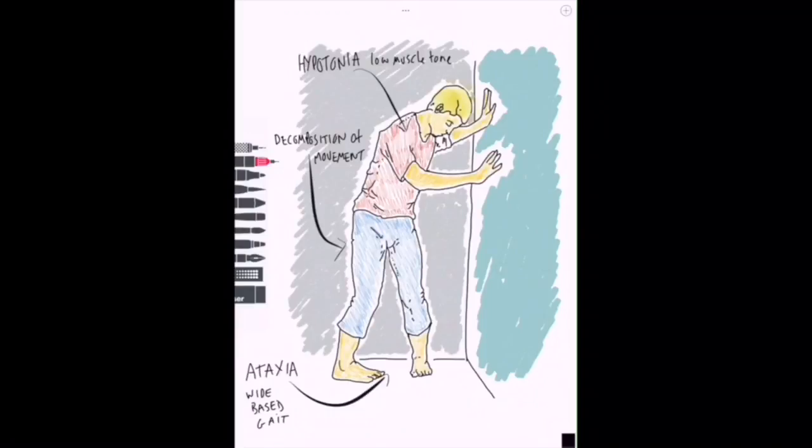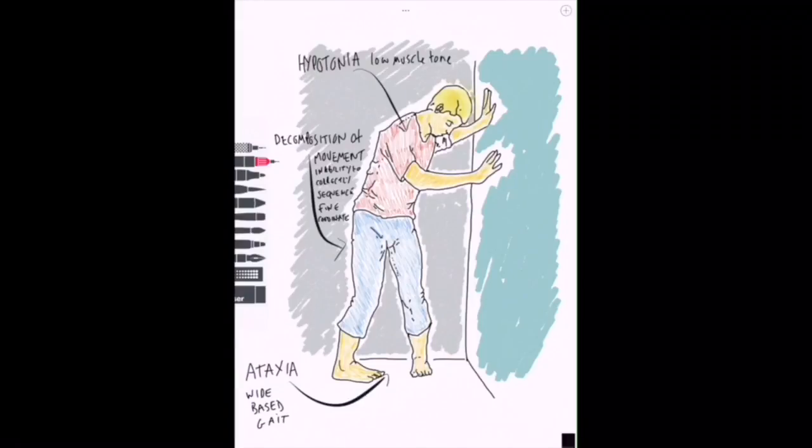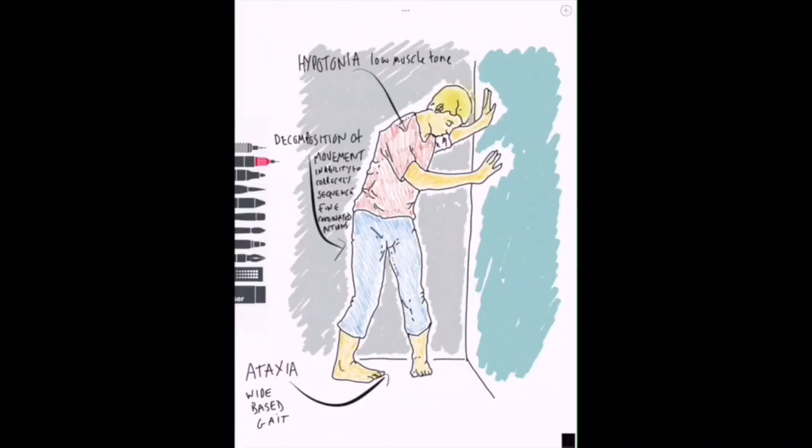Decomposition of movement is jerky and imprecise movements that are neither fluid nor smooth. The cerebellum is involved in complex movements and it can carry out very precise movements, so when it's damaged one of the most obvious things that we see is jerky, slow, imprecise, and non-fluid movements.